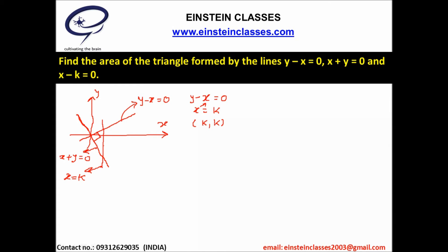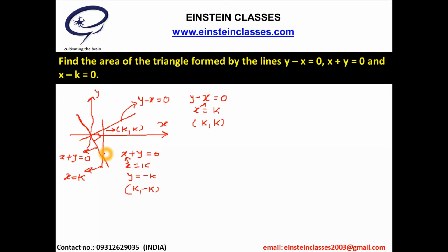To find the point of intersection of x plus y equal to 0 and x equal to k, we solve these two equations and get k comma minus k. So this vertex is k comma minus k.